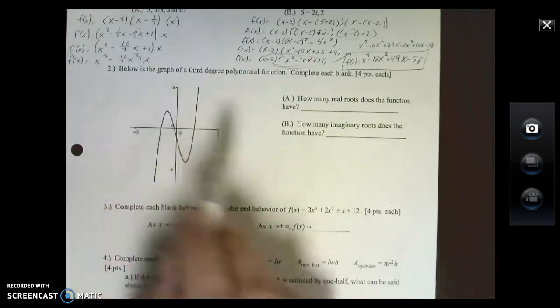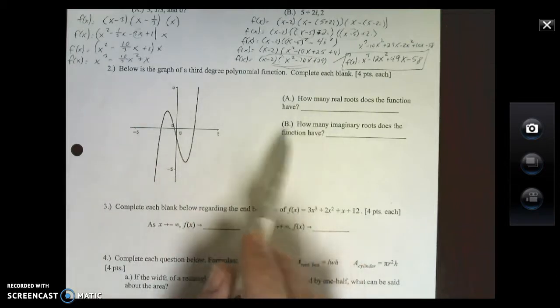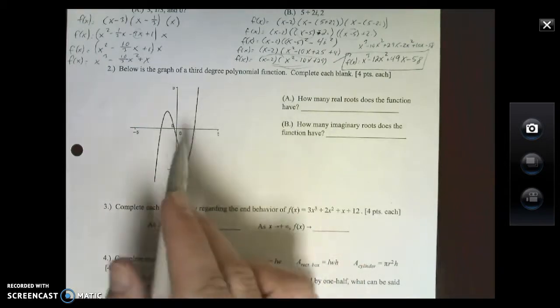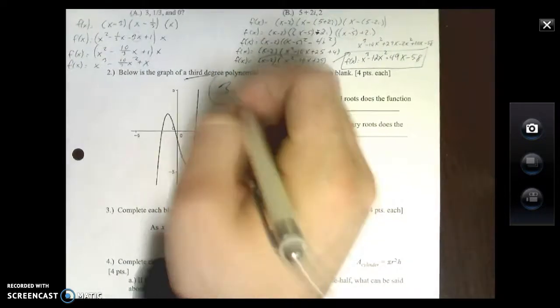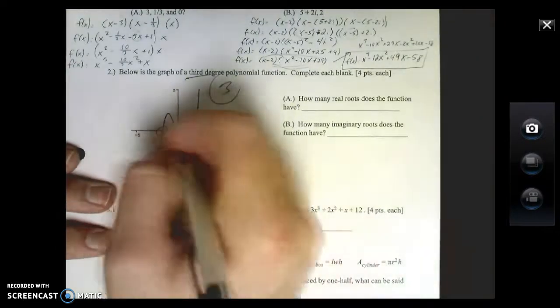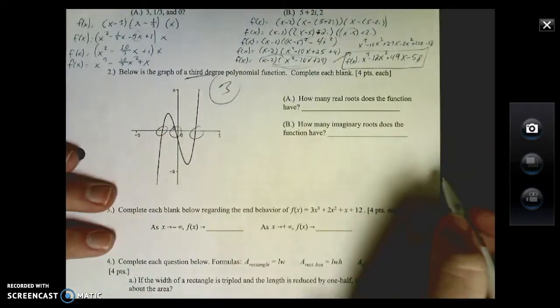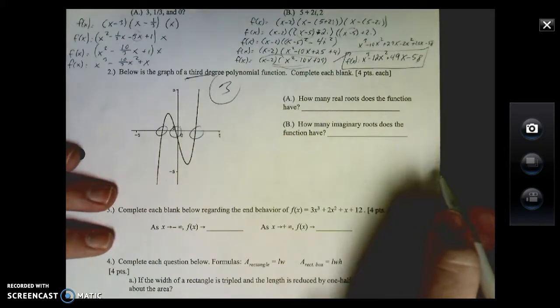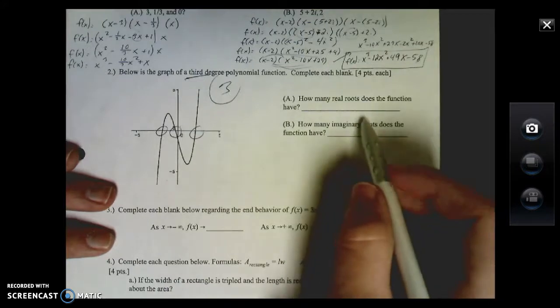We talked about this in class a little bit. Below is the graph of a third degree polynomial function. They're saying third degree - how many total answers could you possibly have? If it's third, that means three. Check out how many times it hits the X-axis: one, two, three.